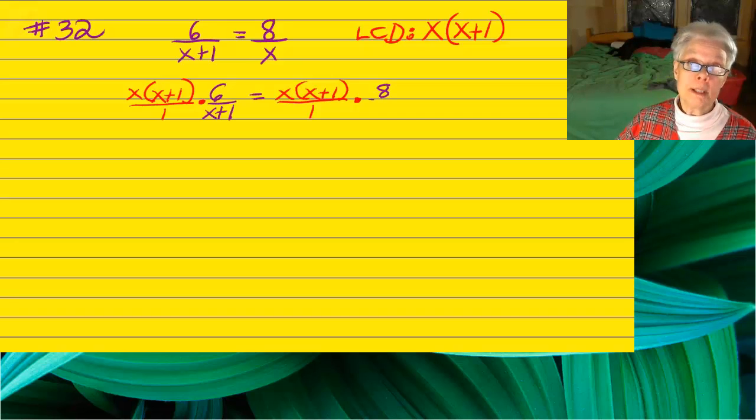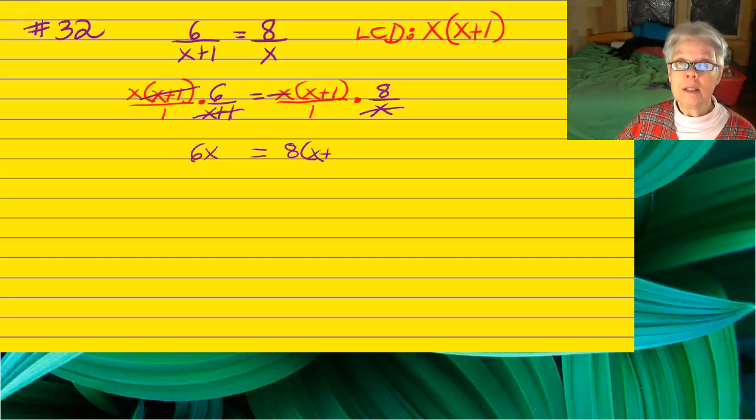And of course, we will then cancel. I love canceling. We'll have 6x on the left. And because the x's cancel, we'll have 8 times x plus 1 on the right.